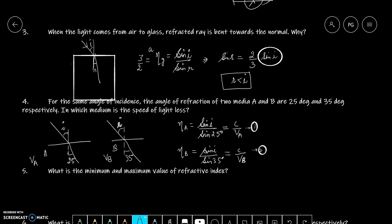Now, let me divide 1 and 2. 1 ko 2 se divide karungi, mughe milega sin i upon sin 25 divided by sin i upon sin 35. It is equal to VB upon VA. Ab, this gets cancelled. And humain pata hai sin 35 must be greater than sin 25. Kyunki hum 0 se 90 jab jathe hai, toh sin ki value badhti hai. Iska matlab VB must be greater than VA.